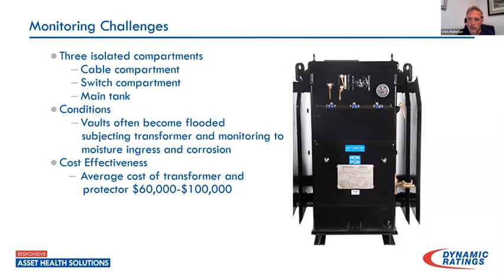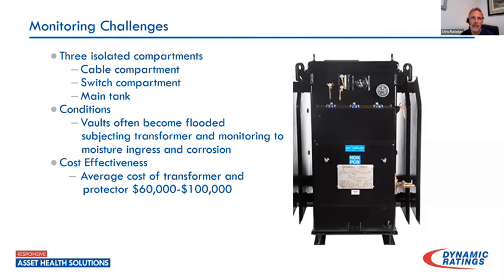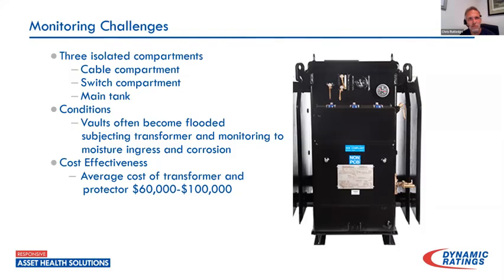There are some challenges when you come to looking at these. First of all, it's not that expensive a piece of equipment. Average costs, if you're counting this plus a protector, are probably around $60,000 to $100,000. Once you start applying the old 10% rule for monitoring, that's a tough sell. That cost-based approach has always seemed the wrong way to look at it to me. I'd prefer to look at it from the perspective of: if one of these fails, what's the aftermath of that event?